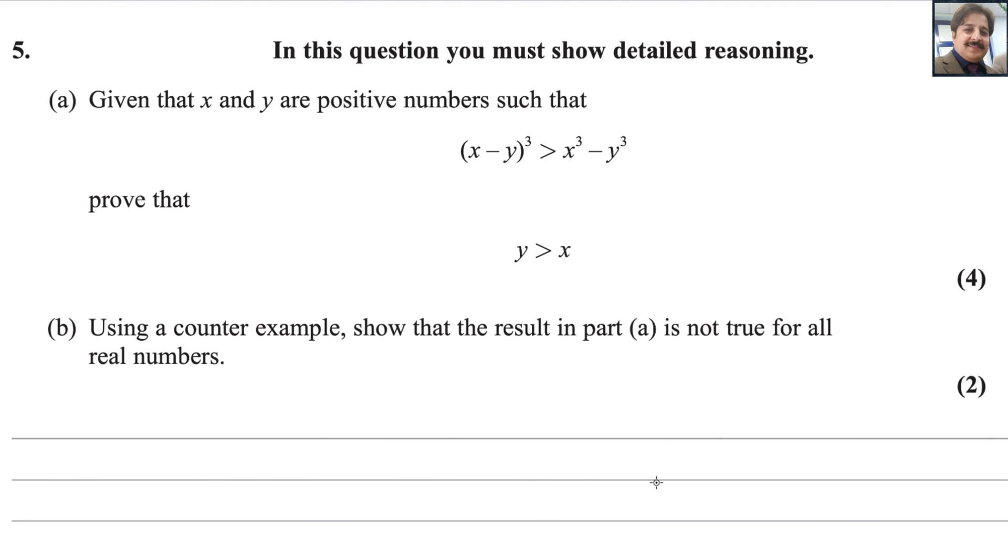Hi everyone, welcome back to my math channel MathWeb. Let us start question number 5 from the PSN and NXLA level exam for Pure Math 2. This exam was taken in May-June 2024, paper reference code WMA12/01. For the first part, given that x and y are positive integers such that (x-y)³ is greater than x³ - y³, prove that y is greater than x.